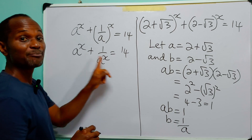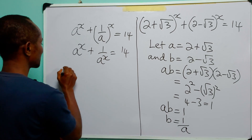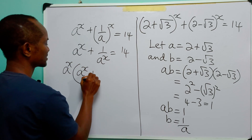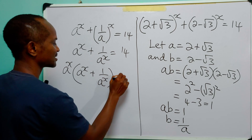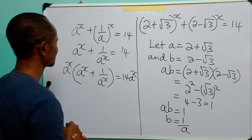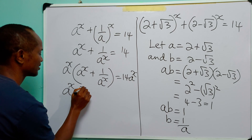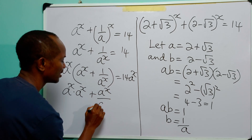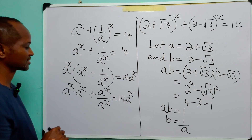Our next step is to multiply both sides of this equation by A raised to power x. So we have A^x times A^x plus A^x over A^x is equal to 14 multiplied by A raised to power x.